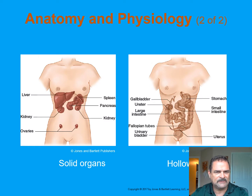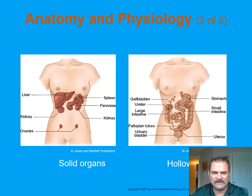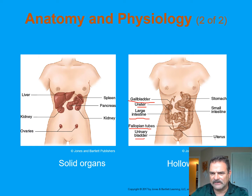This illustration shows the location of the organs in the abdominal cavities. On the left, the solid organs: the liver, kidney, ovaries, spleen, pancreas, and kidneys on the right side. On the right side, you have the gallbladder, ureter, large intestine, fallopian tubes in females, urinary bladder, uterus, small intestine, and the stomach.